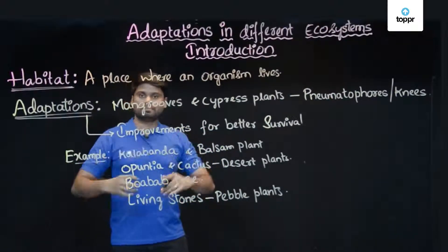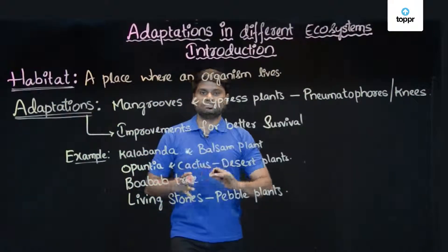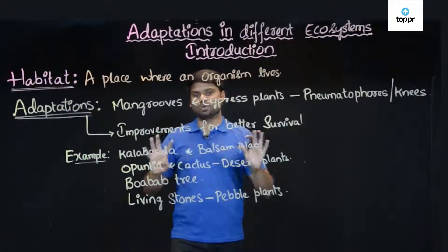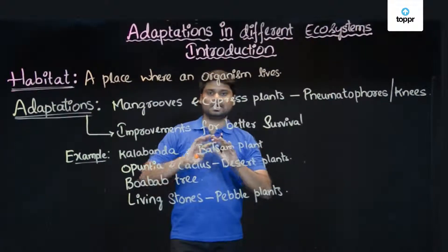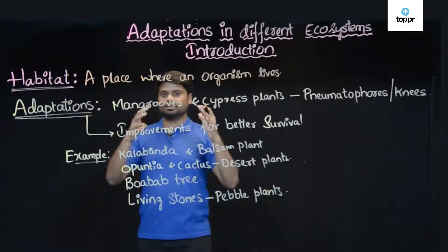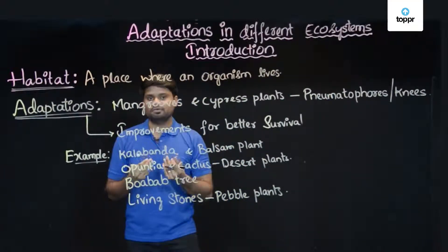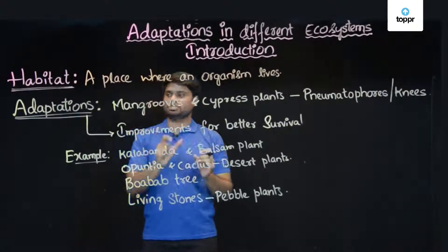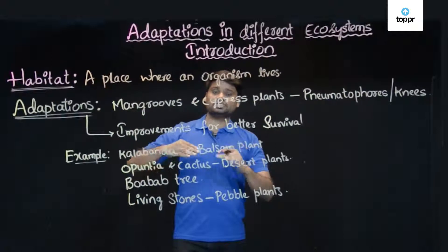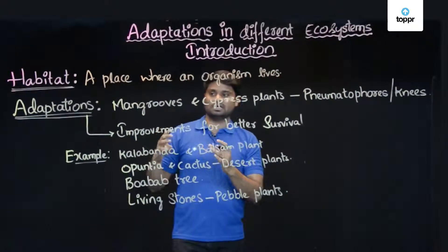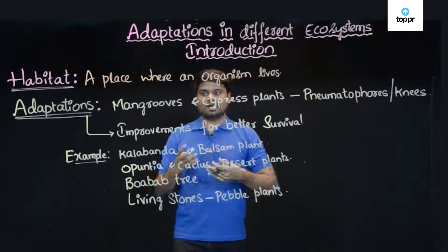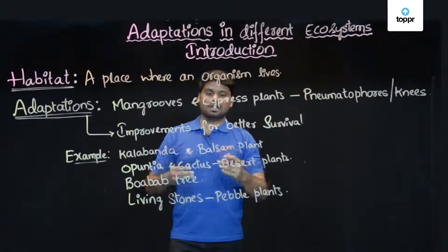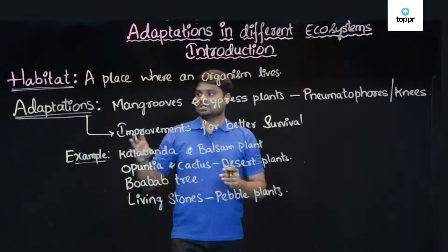For example, you are a student who has changed schools. That new school has different rules and a totally different teaching pattern. To adapt to that new school, you will have to undergo some changes within yourself — so this is adaptation. The same we see in organisms. In extreme environments, organisms undergo certain changes in their body parts, thereby achieving better survival.